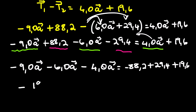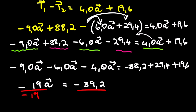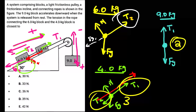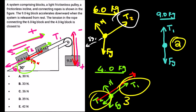This gives us −19a = −39.2. Dividing both sides by −19, we get a = 2.063 m/s². This is the acceleration of the system — the 9.0 kg block moves at 2.063 m/s², and both incline blocks are also moving at 2.063 m/s².